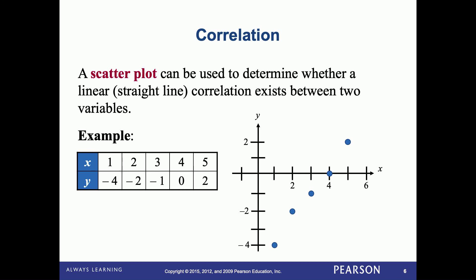Now, in real life, data points are not going to line up perfectly. So a scatter plot shows a general relationship of the correlation of the data.